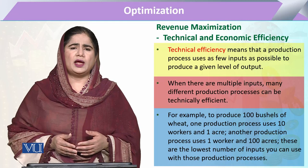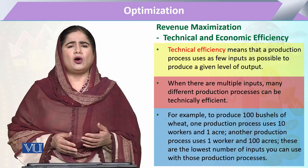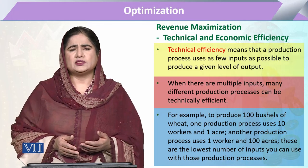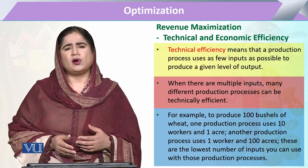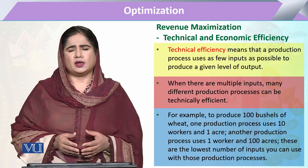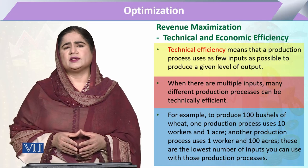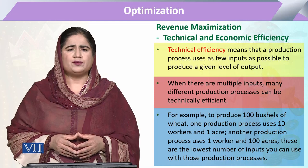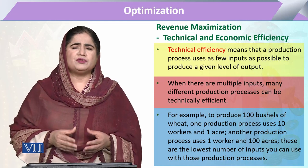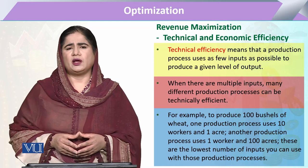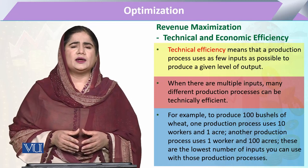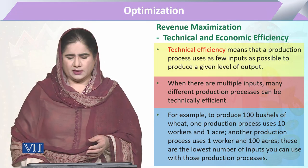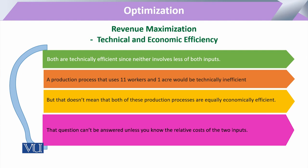Likewise, if we add one more unit of capital — 10 labor plus 51 capital — that will also be called inefficient in this particular case. So when a production function utilizes all of its resources efficiently to produce the maximum level of output, we say it is technically efficient. This particular case explains the rate of technical substitution.